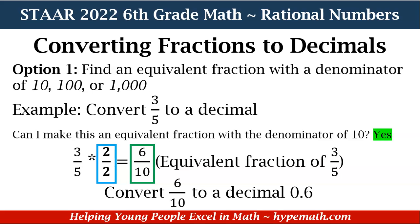Now what we need to do is convert 6 tenths to a decimal. That's easy because we know that 6 tenths is 0.6, because that first place value after the decimal is the tenths place. And that is how we convert fractions to decimals when we look for an equivalent fraction with a denominator of 10, 100, or 1000.